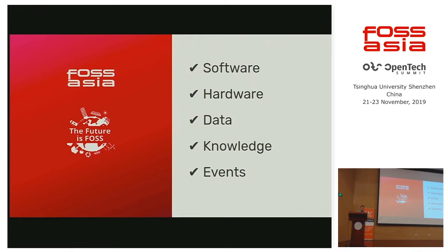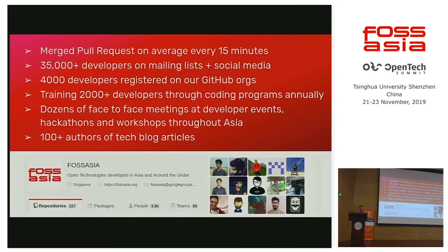We have, for example, our GitHub repositories where we have on average every 15 minutes a merge pull request. We have a lot of people on our mailing lists, and it's actually developers. We focus on developers — more than 4,000 people are registered in the organization. We know it's always easy to create big numbers, but we also see a lot of constant activity. Sometimes people come, sometimes they go, sometimes they come back again, but we have regular contributions from many people.